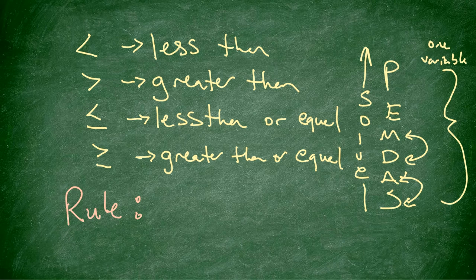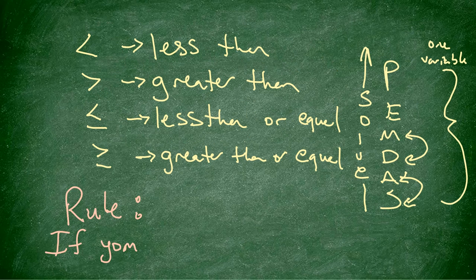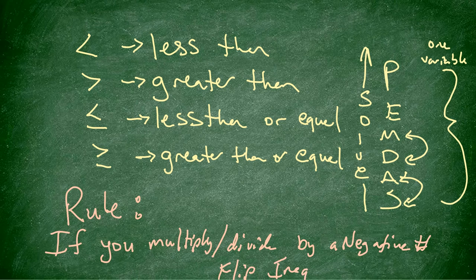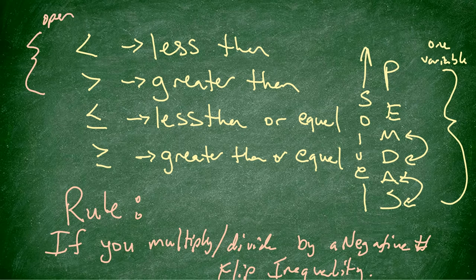Remember, we used PEMDAS with one variable. The big rule we talked about: if you multiply or divide by a negative number, you flip the inequality. That's the big thing to remember. Also, this was an open dot on our number line, and this was a closed dot.